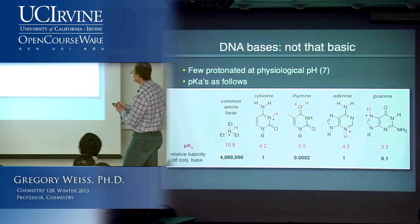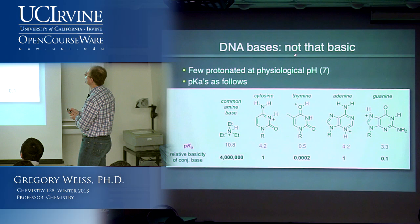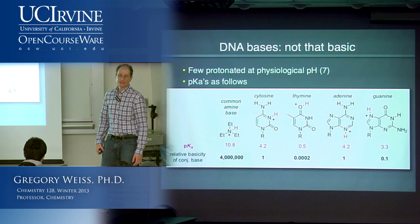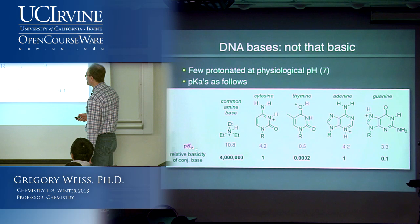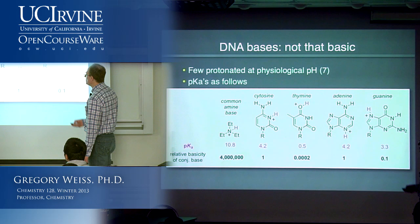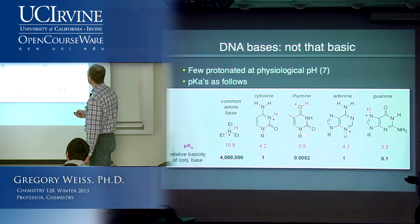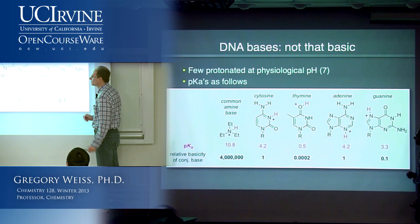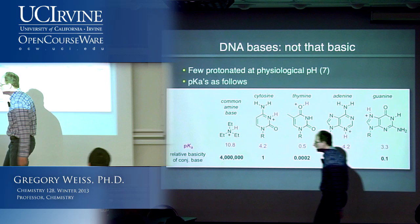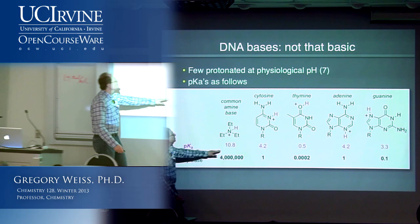Even though DNA bases are called bases, it turns out they're not that basic and few are protonated at physiological pH — this is kind of a historical anomaly. Here are some pKa values: triethylamine has a pKa of 10.8, whereas cytosine, thymine, adenine, and guanine all have pKa values such that none would be remotely considered basic. Triethylamine is definitely a base, as evidenced by its conjugate acid pKa of 10.8.